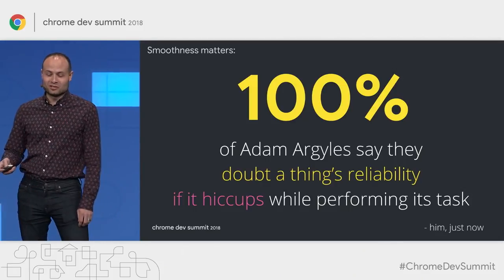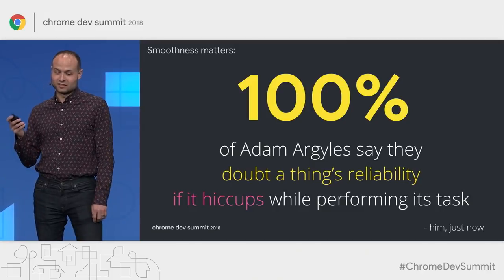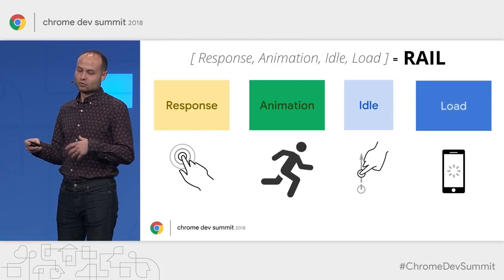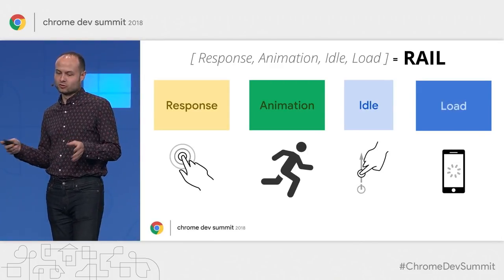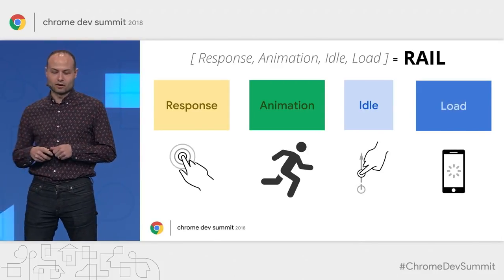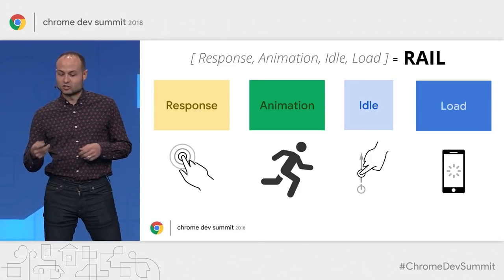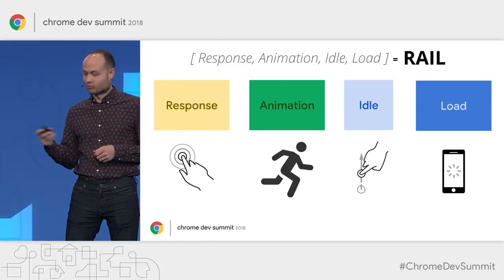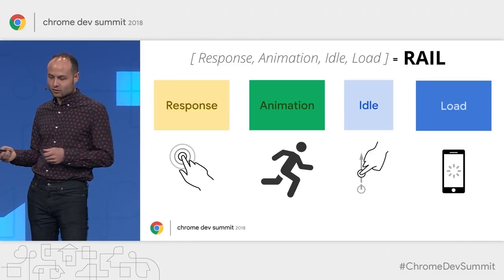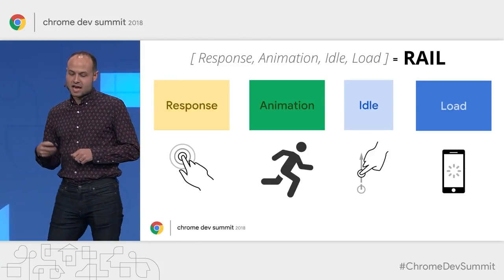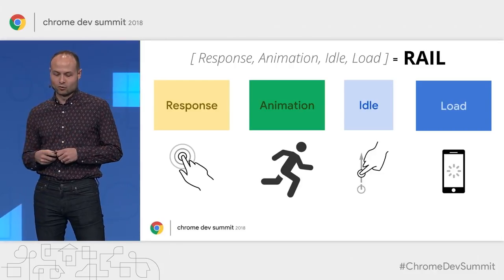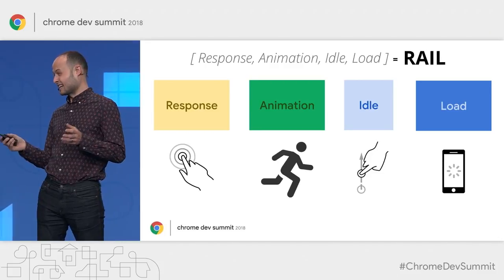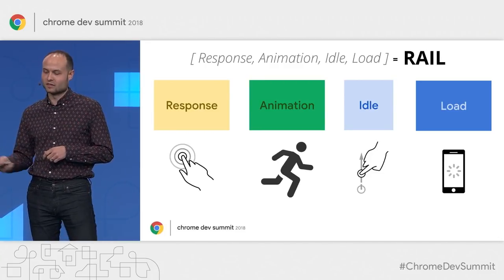Any time we talk about the perception of performance, it's useful to frame things using the RAIL model. RAIL provides a set of goals covering the four ways we perceive performance and speed when using software. Those are: Response — reacting to events in 100 milliseconds; Animation — producing frames in 16 milliseconds; Idle — maximizing idle time; and Load — loading in under one second. These are based off of a few decades worth of research, so they're very unlikely to change.